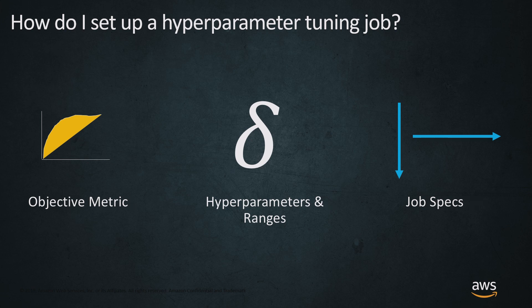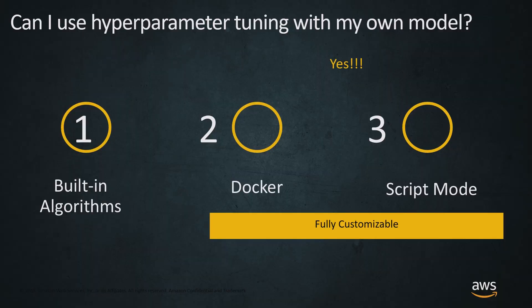The last thing to set up is the job specs: the total number of jobs versus the number of jobs to run in parallel. The good news is you can use hyperparameter tuning with your own model. You can use it with the 17 built-in algorithms that come off the shelf with SageMaker. And for both bringing your own model in Docker and in script mode, you can utilize the hyperparameter tuner in a fully customizable manner.